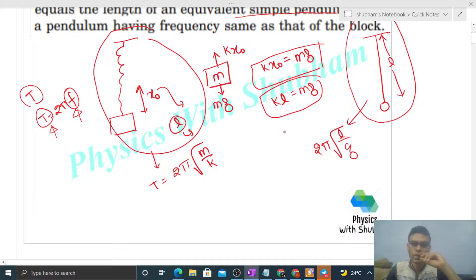So let's do one thing. From here we replace k, k is equal to mg by l. So this k we take and put it here. So 2π under root of m by k becomes mg by l. So m and m cancel, you can see they are the same, right?